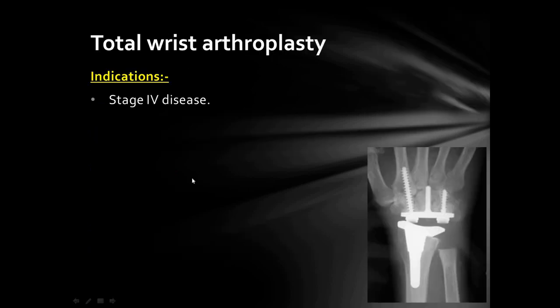The next option is total wrist arthroplasty, which is done in Stage 4 disease.